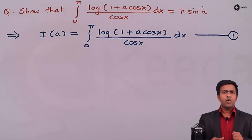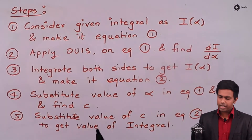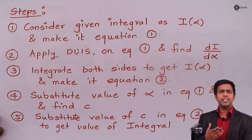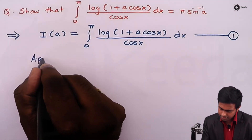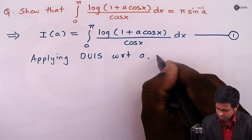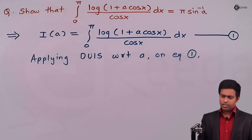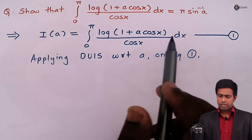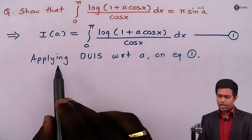After applying step number one, we move to step number two, which says to apply the DUIS rule on equation number one and find the value of dI/dα — in our case, dI/da. We apply DUIS on equation number one with respect to the parameter a. Remember: whenever we apply DUIS, we always apply it with respect to the parameter, so here I am applying DUIS with respect to a.